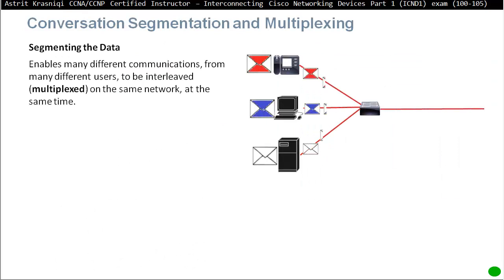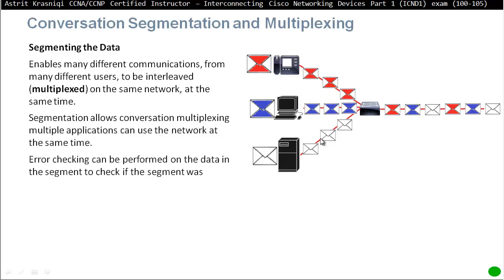Conversation segmentation and multiplexing: segmenting the data enables many different communications from many different users to be interleaved, or multiplexed, on the same network at the same time. For example, when you access the internet, you may be opening three or four web browsers, opening YouTube, sending emails, watching a movie — the transport layer makes all that possible. Segmentation allows conversation multiplexing; multiple applications can use the network at the same time. Error checking can also be performed on the data in the segment to verify it wasn't changed during transit.